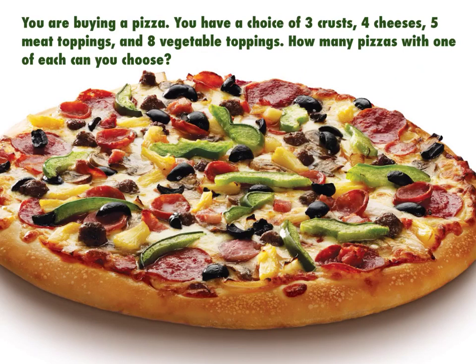Alright, so now it's lunch time. You're going to buy pizza. You have a choice of three crusts, four cheeses, five meat toppings, and eight vegetable toppings. They have a special deal where you choose one of each of those things. How many pizzas with one of each could you choose? So I could make a big tree diagram with this, but that would take forever and be huge. So instead, we're going to use the fundamental counting principle.